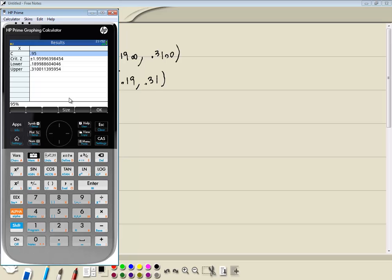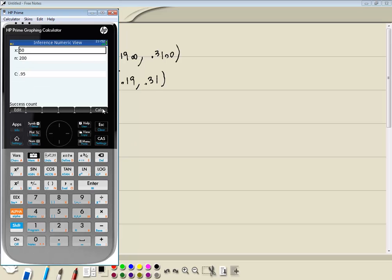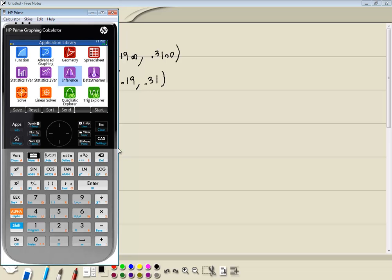Now to get out of this, you simply just press your OK. And you press your apps to go back to your main screen. And that's how to find a confidence interval for a population proportion given one population, one sample.